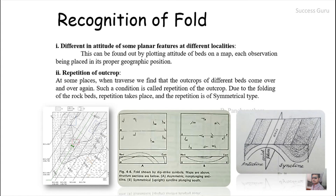The next indicator is repetition of outcrop. One of the main causes of repetition is folding, and the repetition is symmetrical in nature. If you move from the center outward, whatever sequence appears on the left-hand side appears in the same order on the right-hand side — a mirror image — which is called symmetrical repetition, caused by the presence of a fold.